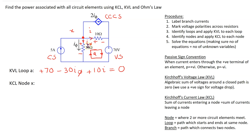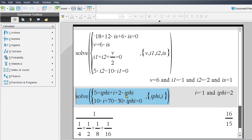Next let's apply Kirchhoff's current law to node X. KCL states that the sum of currents entering a node equals the sum of currents leaving a node. At this node we have 5 amps entering and three currents leaving, giving us: 5 = I_phi + I + 2I_phi. We now have two equations and two unknowns. Using a scientific calculator we can solve these to show that I = -1 amp and I_phi = 2 amps.